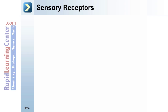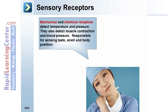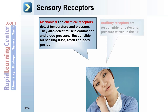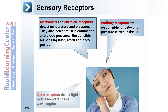Sensory receptors: mechanical and chemical receptors detect temperature and pressure, muscle contraction, and blood pressure. They are also responsible for sensing taste, smell, and body position. Auditory receptors detect pressure waves in the air, and optic receptors detect light over a broad range of wavelengths.